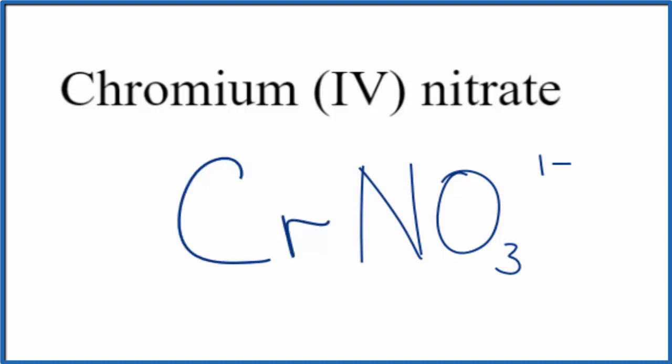When we look at the formula for chromium (IV) nitrate, this four means we have a 4+ charge on the chromium. Because this is a neutral compound, we don't have the word 'ion' written after it. All of these charges need to add up to zero, giving us a net charge of zero.